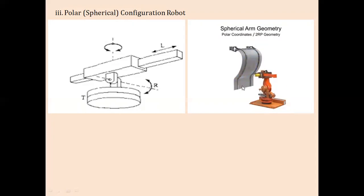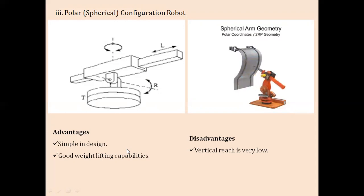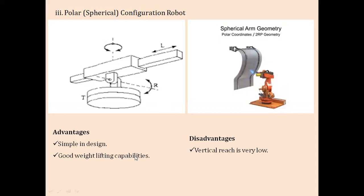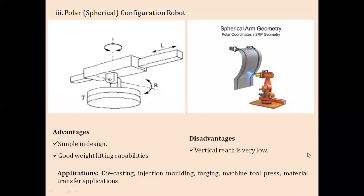The polar configuration has a simpler design since it has two rotational axes, and it can be used for heavy-duty operations with good weight-lifting capability. A disadvantage is the limited vertical reach, since there is only one sliding motion, so the height of vertical reach is very limited. Applications include die casting, injection molding, forging operations, and material transfer.